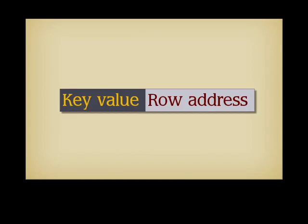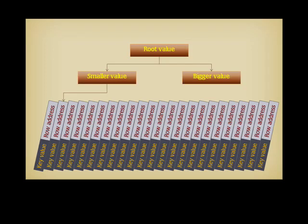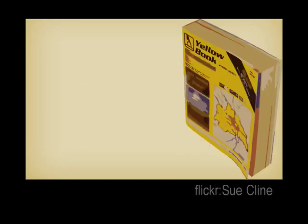An index entry is the association of a key value with a physical address. In an index, all of the entries are stored in sorted order of the key values, and a tree structure is plugged over this list to quickly access the address of a key value by comparison with what you find in the various nodes. Searching an index is in fact very similar to searching a phone book, in which the key is the surname, first name, and perhaps the street, while the associated value searched is the phone number. By comparing the name you search to the top of the page, you reach the right line very fast.